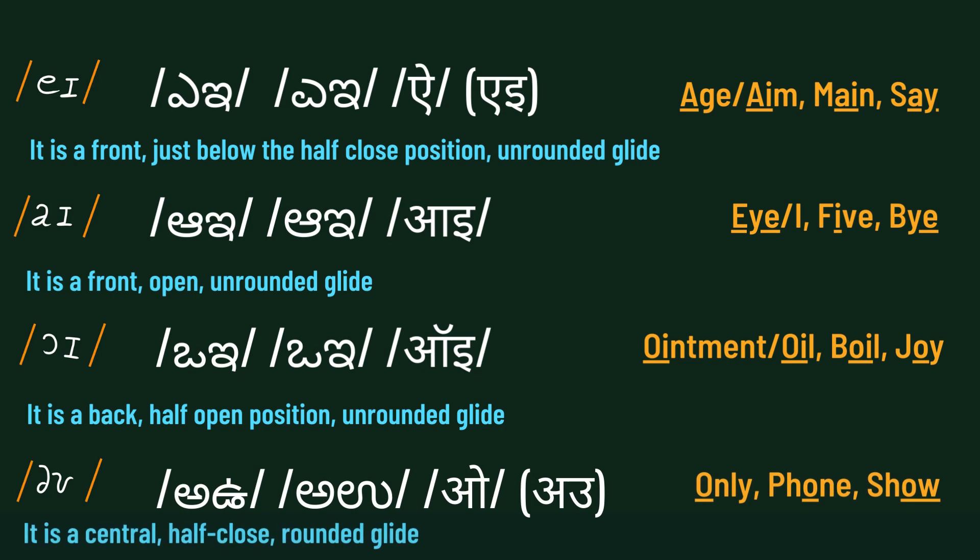The fourth diphthong is /əʊ/. It is a central half-close rounded glide. Examples are: phone, show.